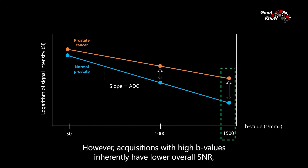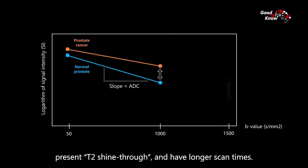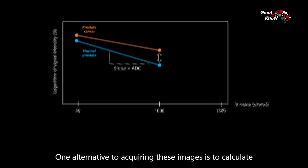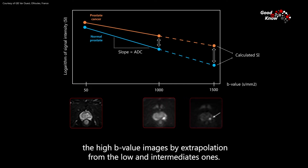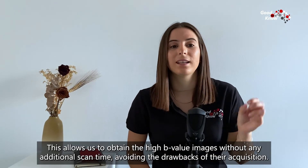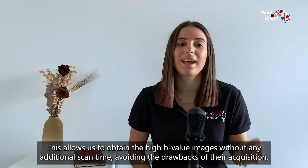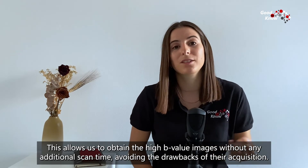However, acquisitions with high B-values inherently have lower SNR, present T2 shine-through, and have longer scan times. One alternative to acquiring these images is to calculate the high B-value images by extrapolation from the low and intermediate ones. This allows obtaining the high B-value images without any additional scan time, avoiding the drawbacks of their acquisition.